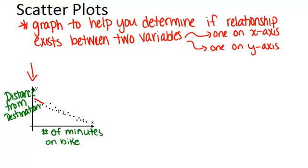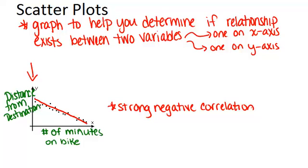I can draw in this line here to sort of show the overall trend of what's happening. So we would call this a strong negative correlation. The reason that it is negative is because as one variable is increasing—the minutes on the bike—the other variable is decreasing.